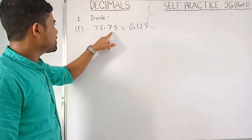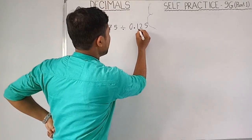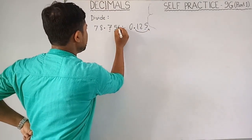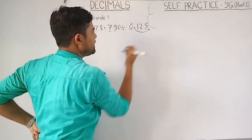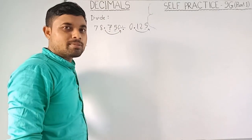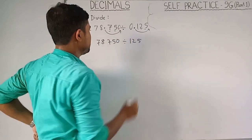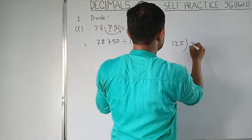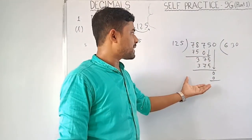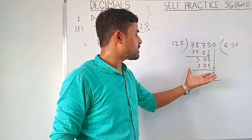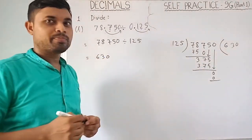Question L: 78.75 divided by 0.125. The divisor has three decimal places: 1, 2, 3. The dividend has two decimal places, so we need to add a zero. Shift three decimal places: 78750 divided by 125. Do the calculation: 125 into 78750. The answer is 630.